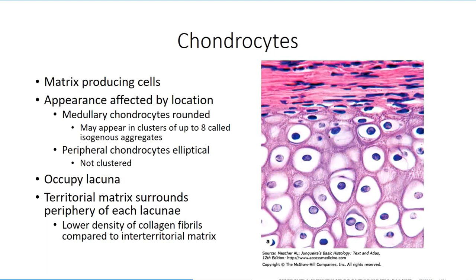The semi-solid nature of the cartilage matrix limits the mobility of cells, and as a result, each occupies a distinct space referred to as a lacuna, which is a Latin term meaning little lake. The image to the right shows a micrograph of cartilage. Looking at the image gives the impression that chondrocytes have a dark staining nucleus in clear cytoplasm, similar to what is seen with adipocytes. This is actually an artifact of the histological preparation. During the tissue dehydration phase, the chondrocytes shrink dramatically while the semi-solid matrix maintains the dimensions of the lacuna. The dark staining portion is what remains of the cell after tissue processing, and the lightly stained periphery is empty space in the lacuna that the cell once inhabited.